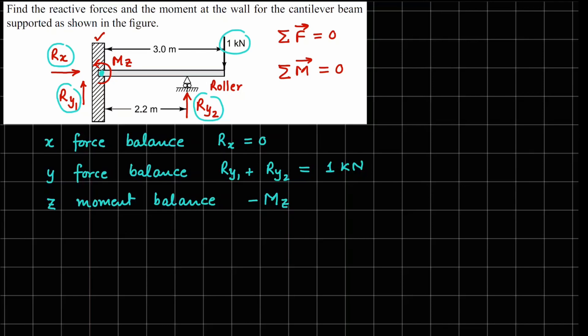Now Ry2 is applied at a distance of 2.2 meters. And it's going to give us a moment following the arrow direction about the cantilever point. We can see this is going in the anticlockwise direction. So it's going to be again negative Ry2 times 2.2 meters.